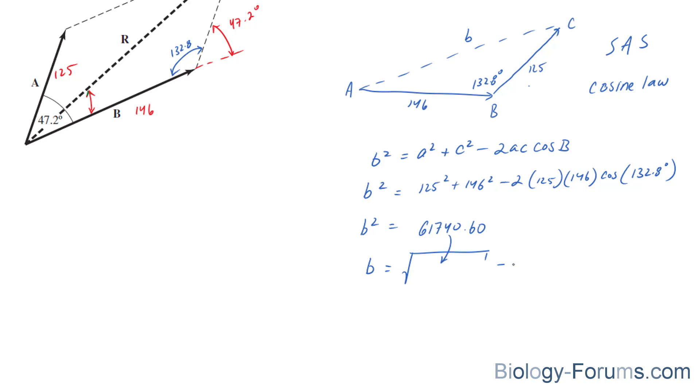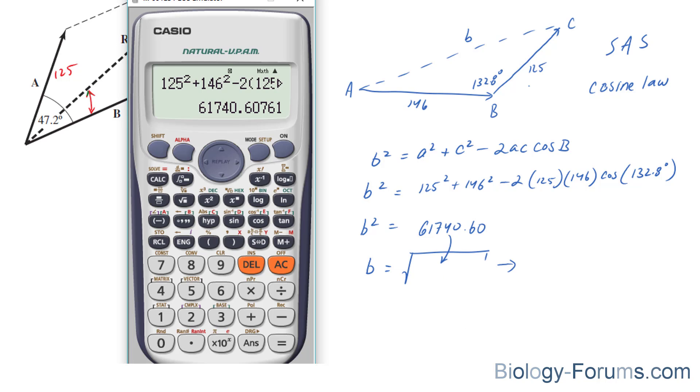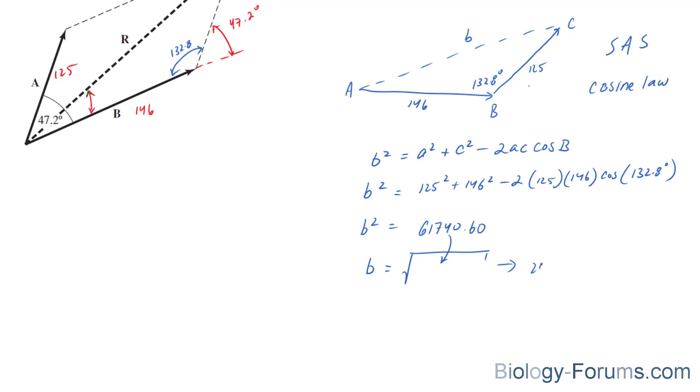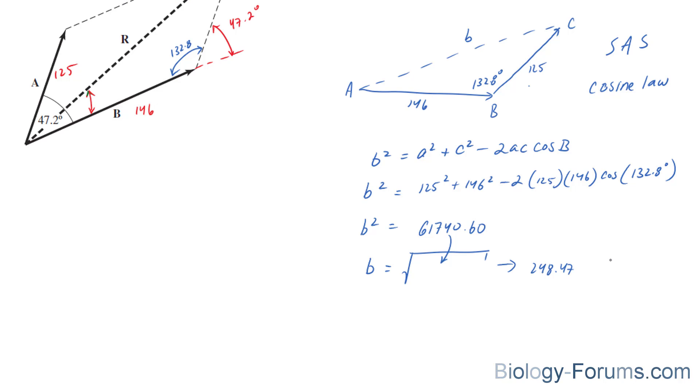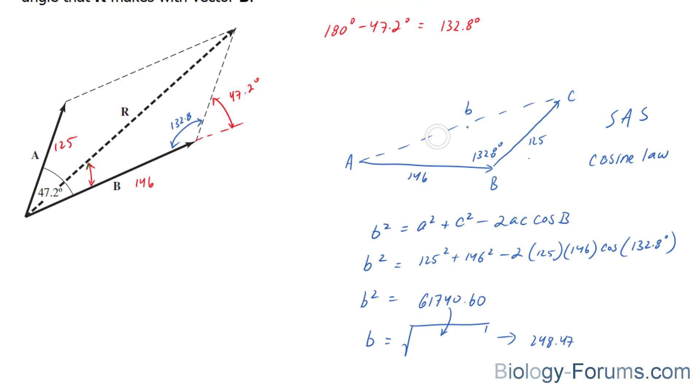So, the square root of this number is equal to 248.47. So, the length of b, the magnitude of this resultant vector, is going to be 248.47 units long.